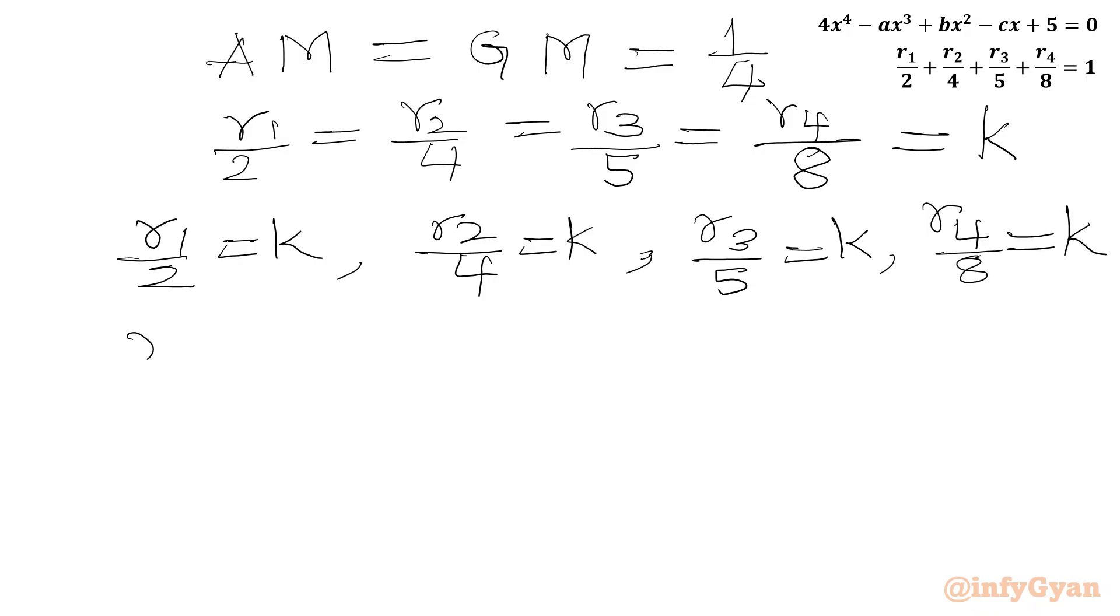Or we can write here R1 is 2k, R2 is 4k, R3 is 5k, and R4 is 8k.